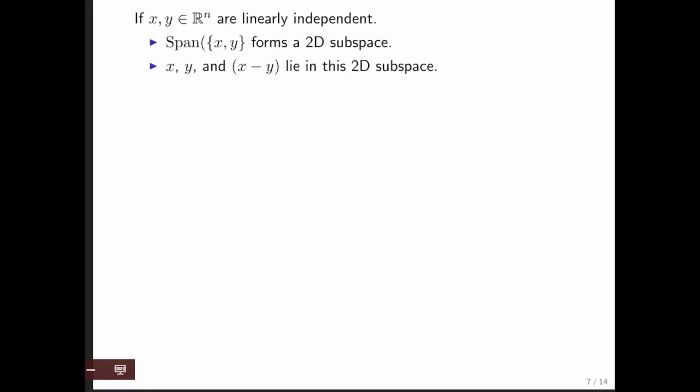We also saw that all linear combinations of x and y are in that same subspace. So we know that x minus y lies in that same 2D subspace, because x minus y is a linear combination of vectors x and y. Therefore, they form a triangle in the same plane.